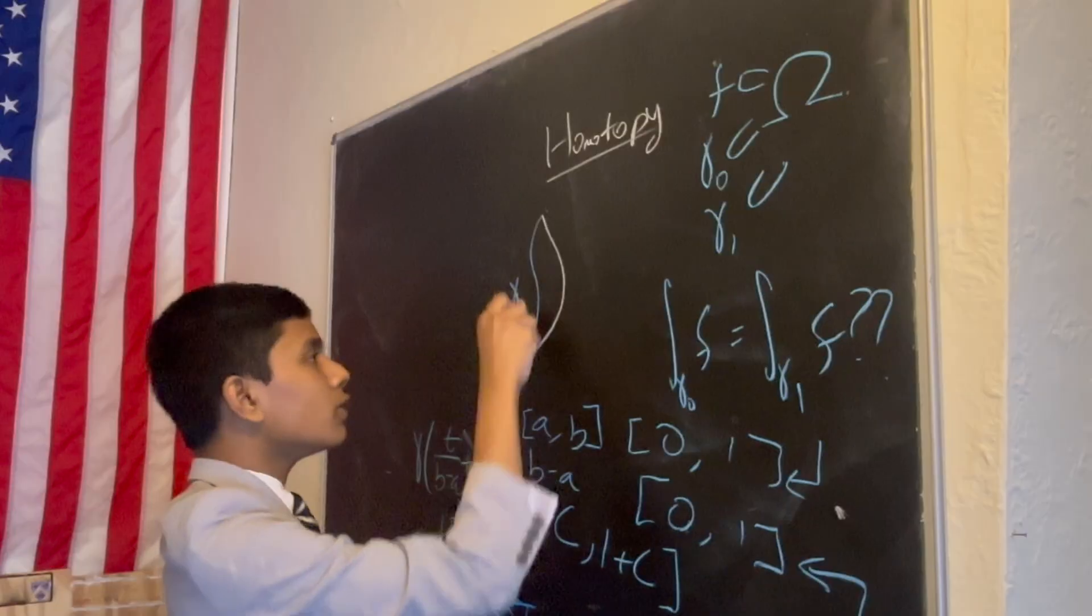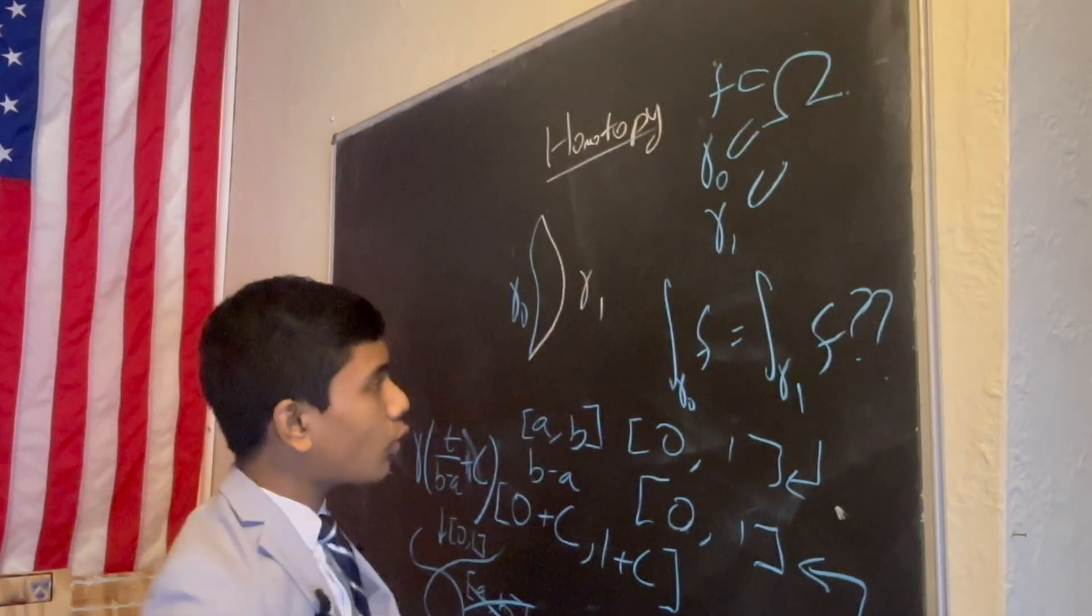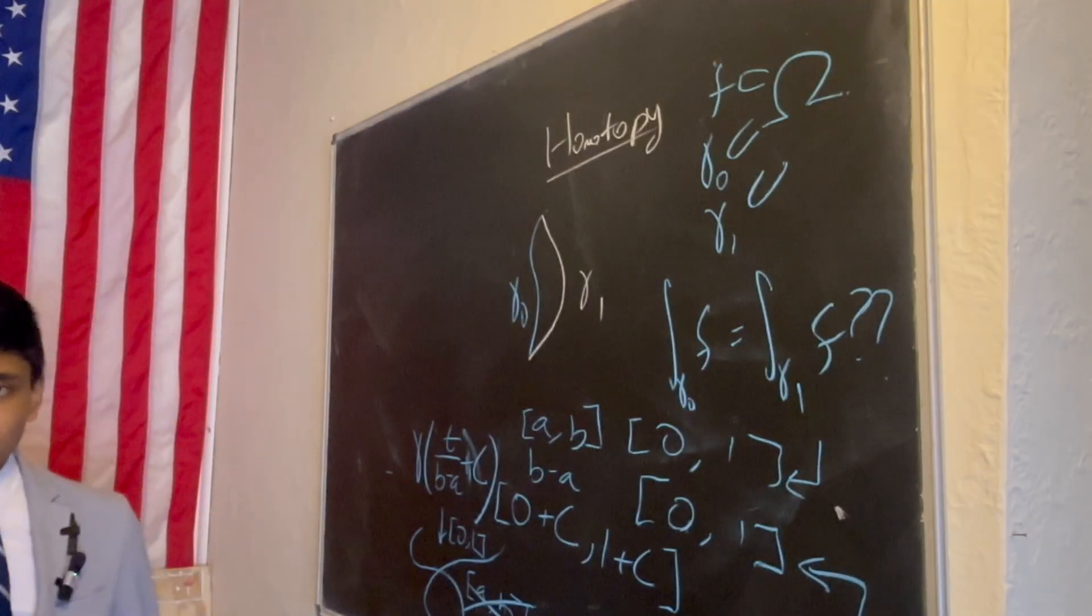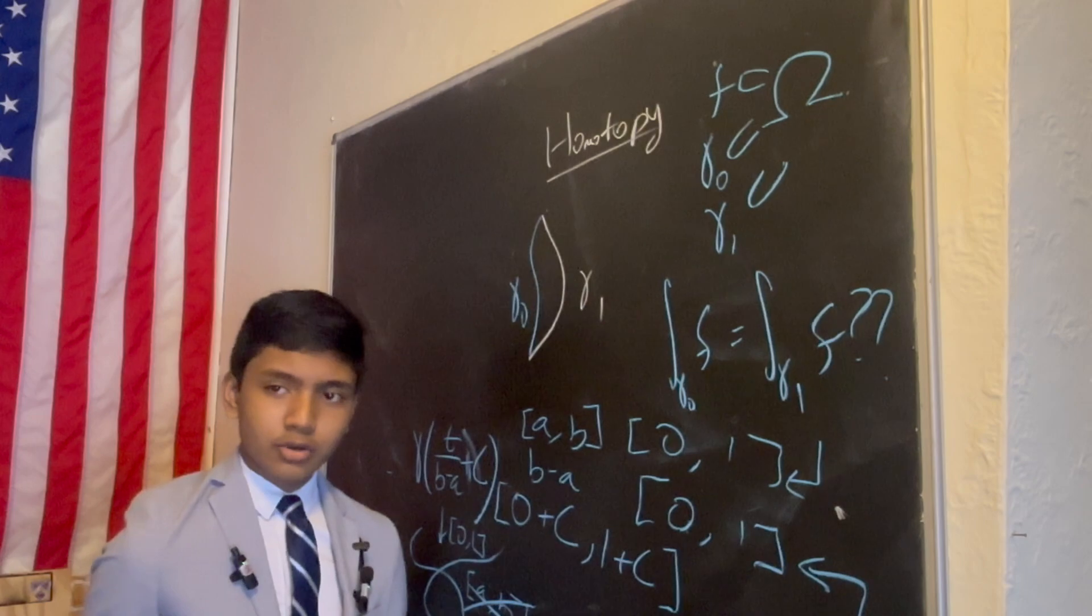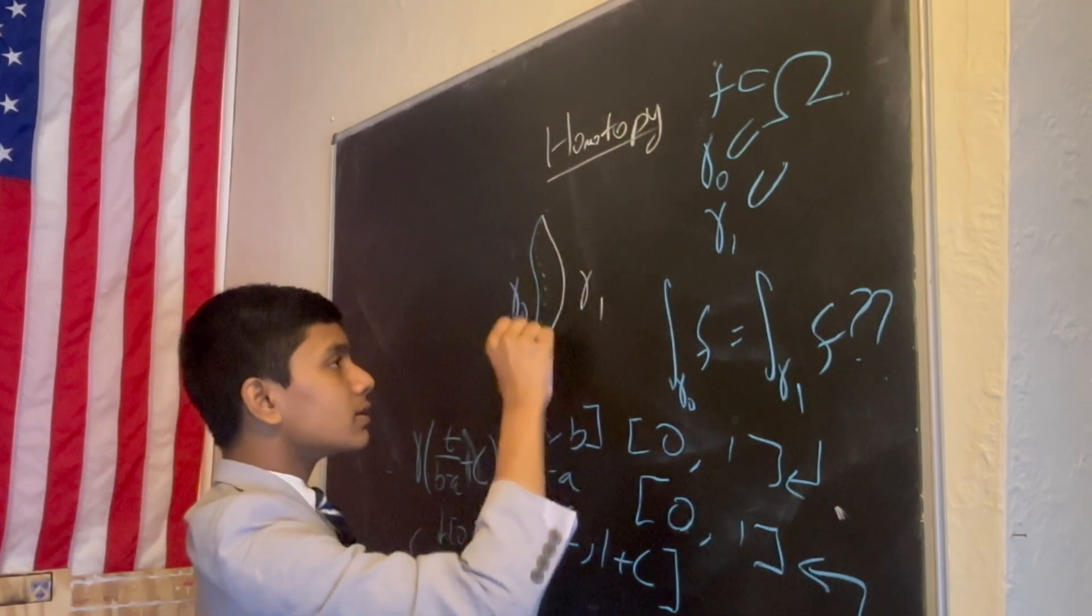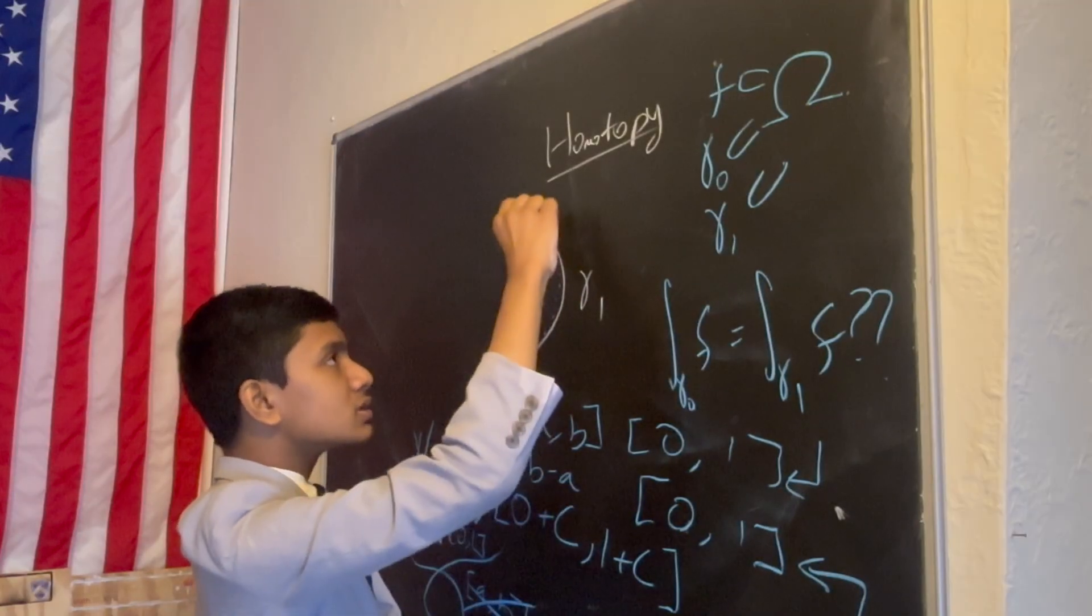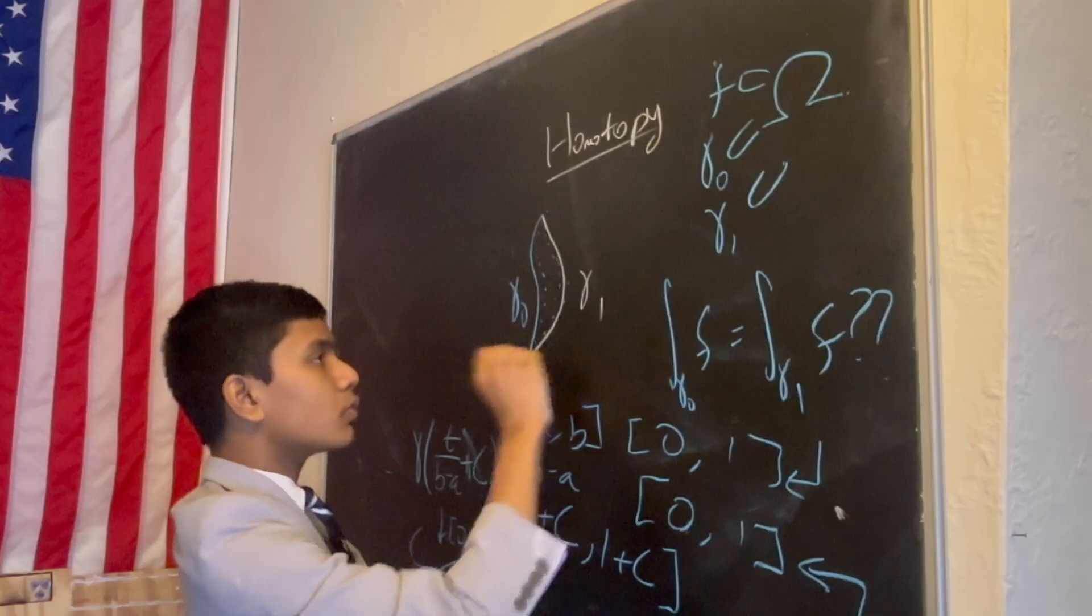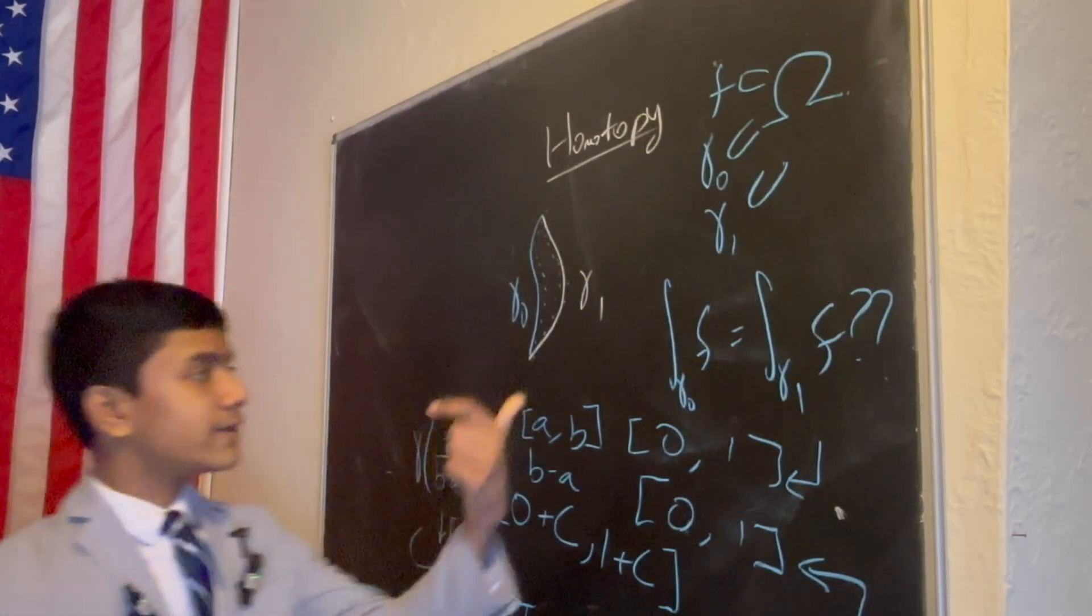So, let's call the blue one gamma 0 and the white one gamma 1. Now, how do we morph gamma 0 into gamma 1? Well, there are infinitely many ways to do it, but one way would maybe be kind of expanding the bulbs in the middle more and more until it eventually becomes of the form of gamma 1.